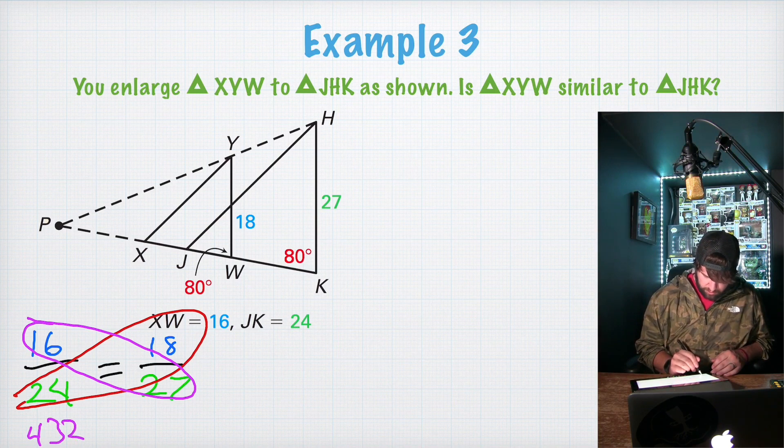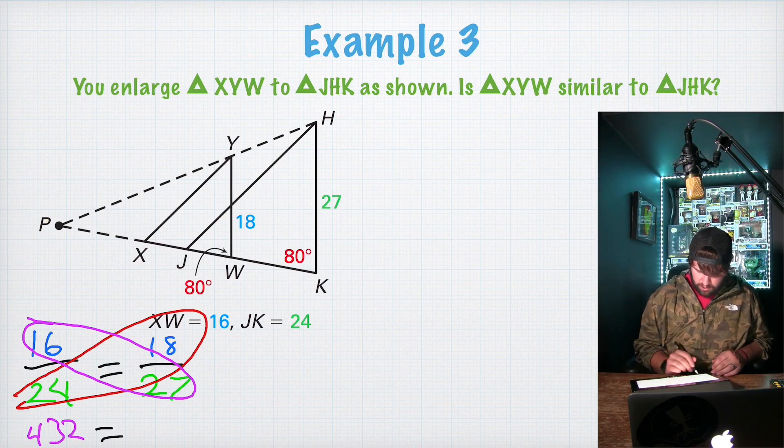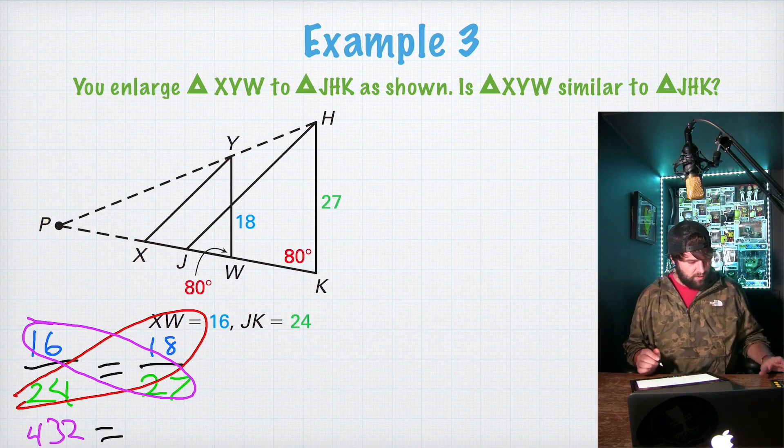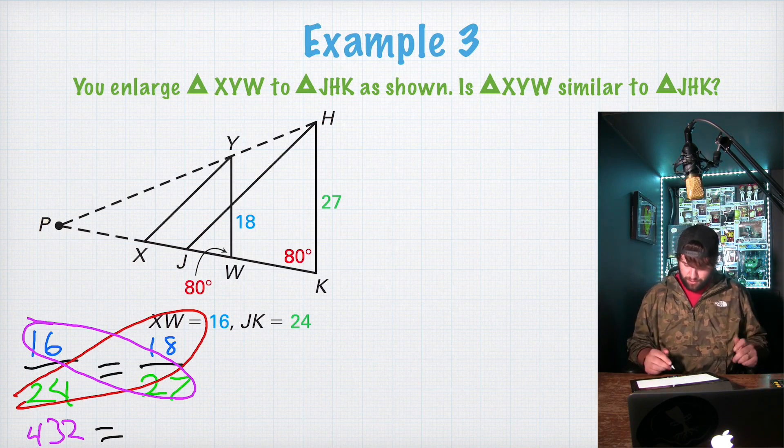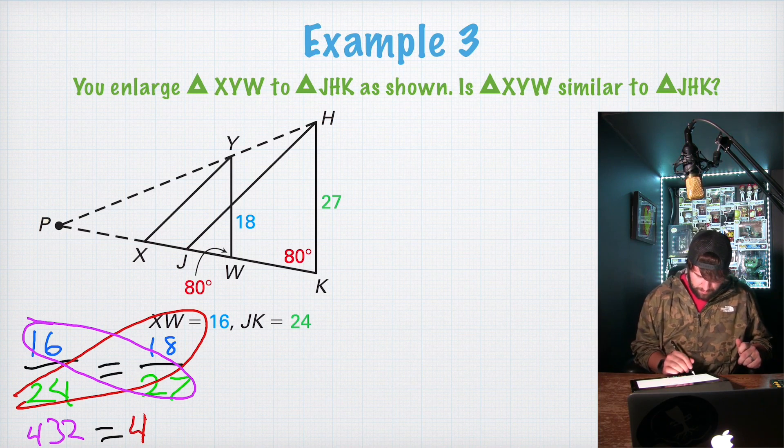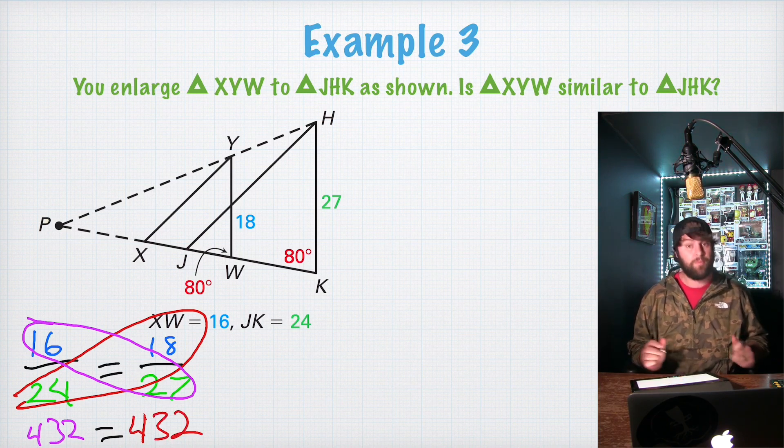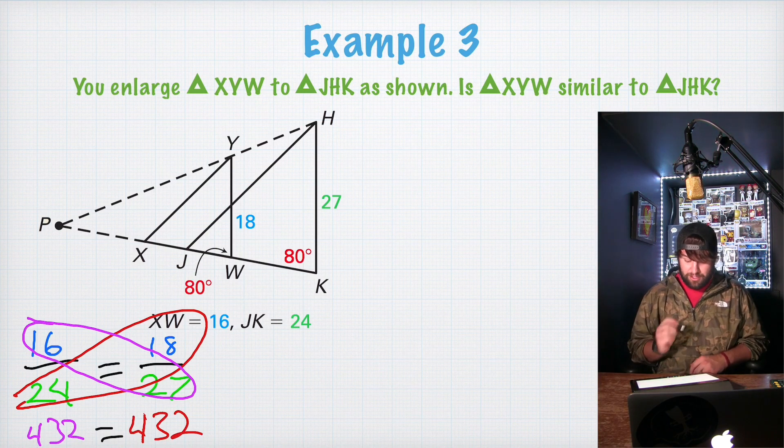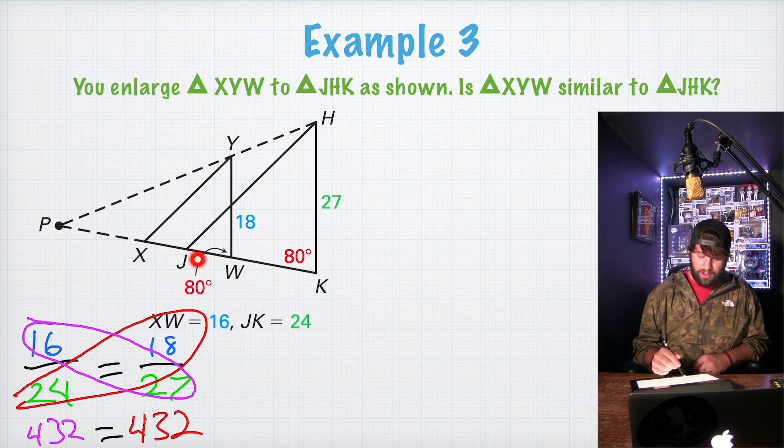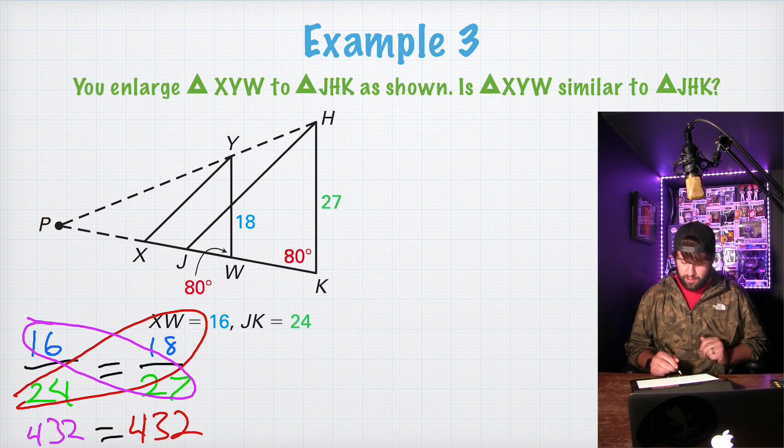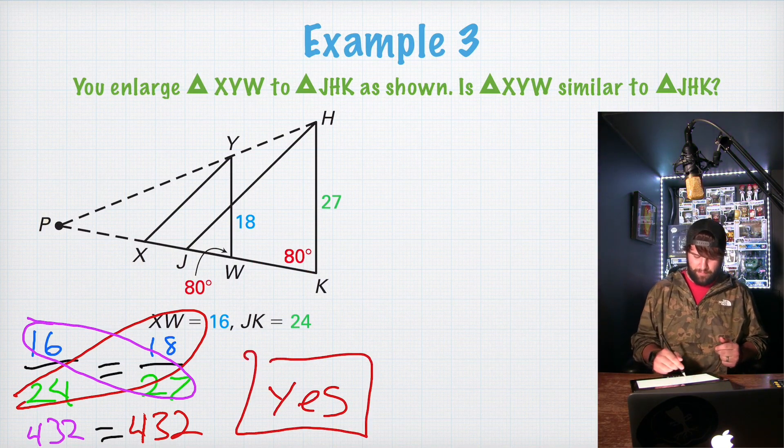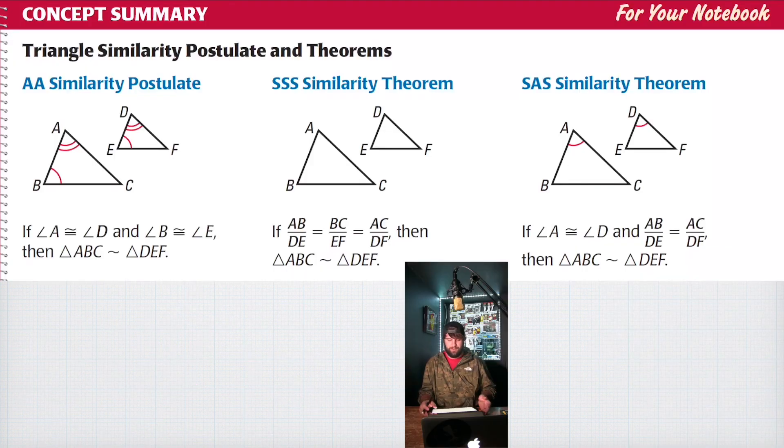So I'm going to go ahead and type this in the calculator. 16 times 27 equals 432. So 432. And that should be equal to 24 times 18 gives us 432. That's another way to make sure they're proportional. So we know the two sides are proportional and their included angle is congruent. So yes, they are similar. Let's go ahead and keep going.